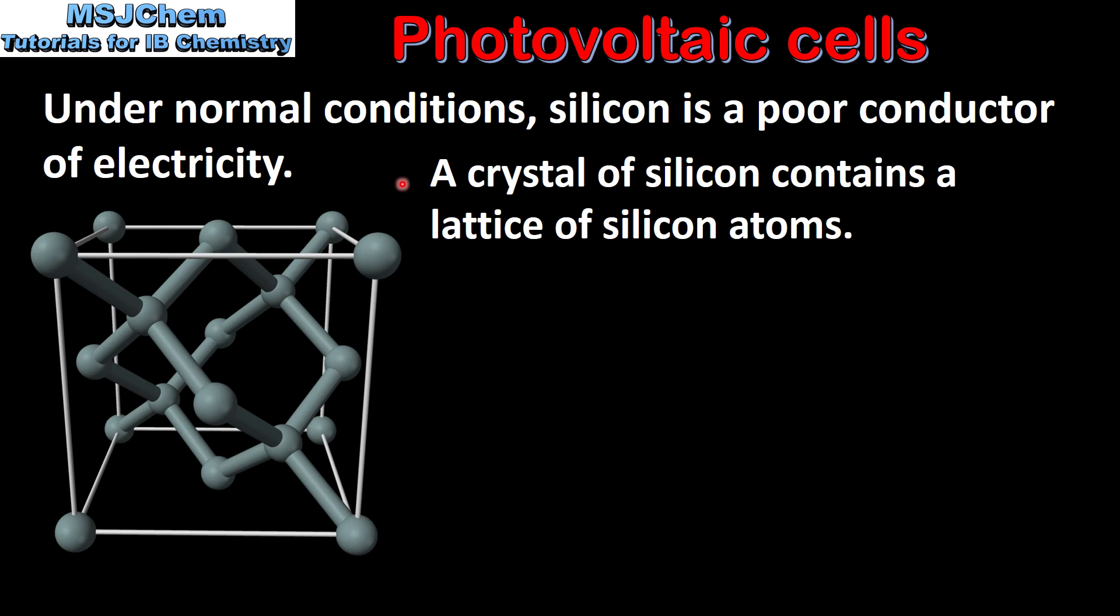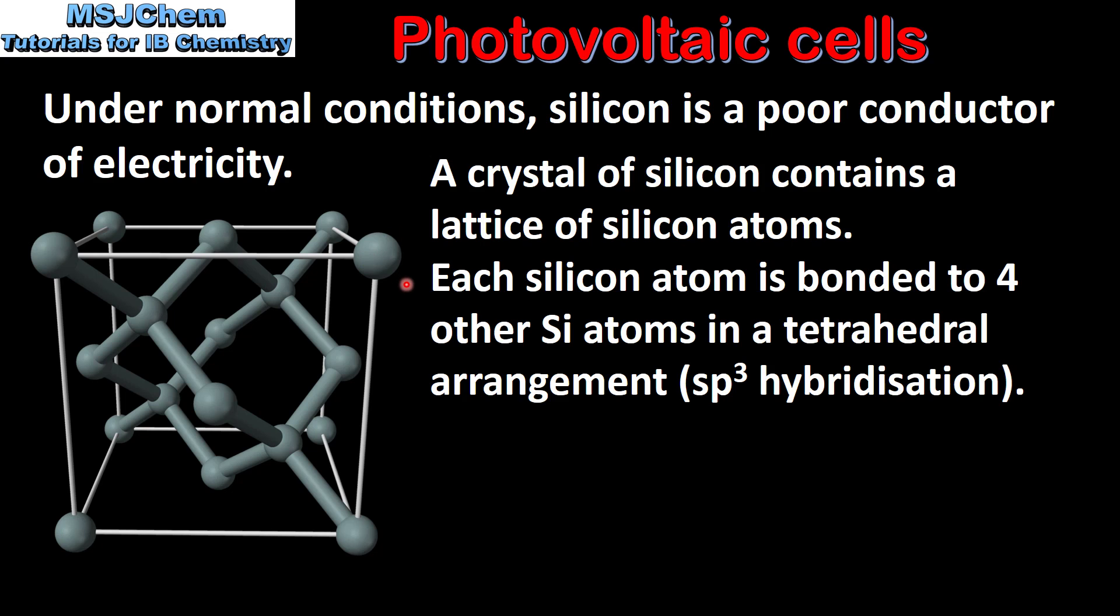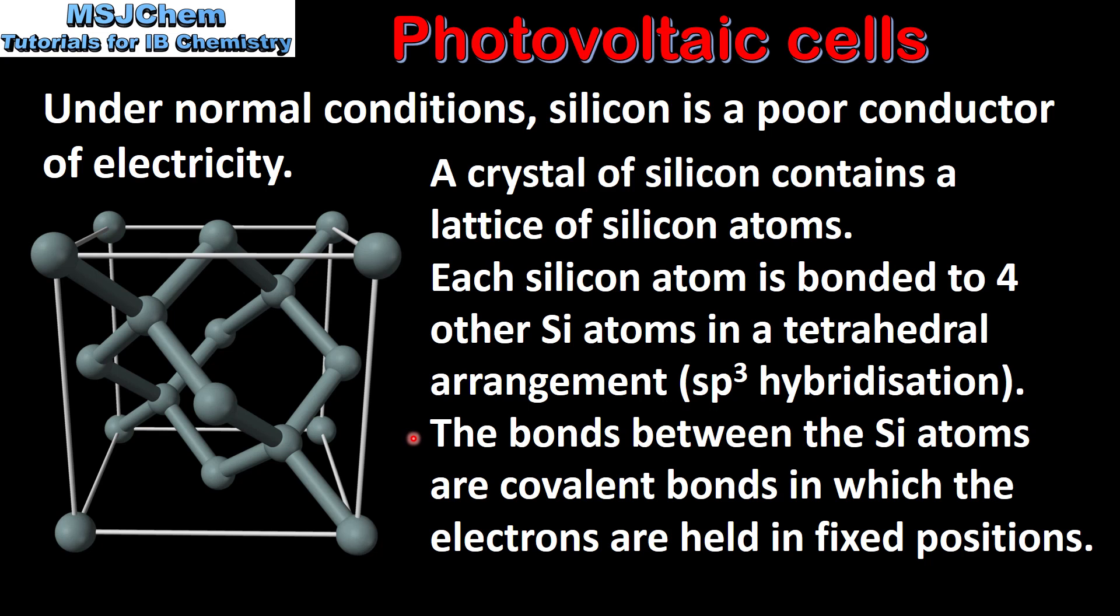A crystal of silicon contains a lattice of silicon atoms, which we can see on the left. Each silicon atom is bonded to 4 other silicon atoms in a tetrahedral arrangement. The silicon atoms are sp3 hybridized. The bonds between the silicon atoms are covalent bonds, in which the electrons are held in fixed positions.